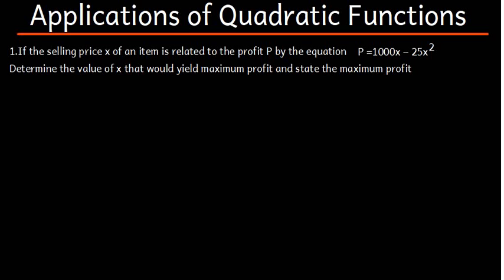We now talk about the applications of quadratic functions. The first question says: if the selling price X of an item is related to the profit P by the equation P = 1000X minus 25X squared, determine the value of X that would yield maximum profit and state the maximum profit.